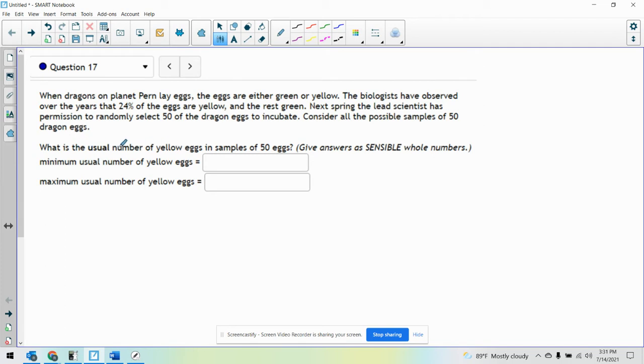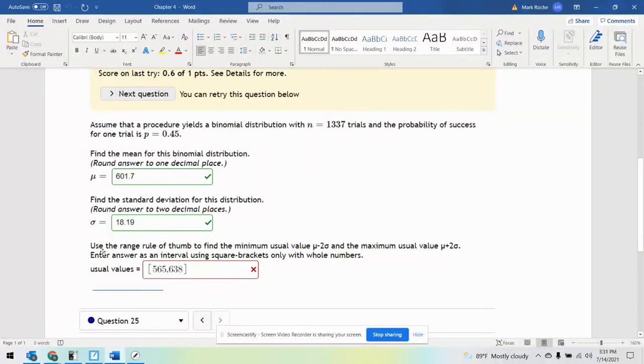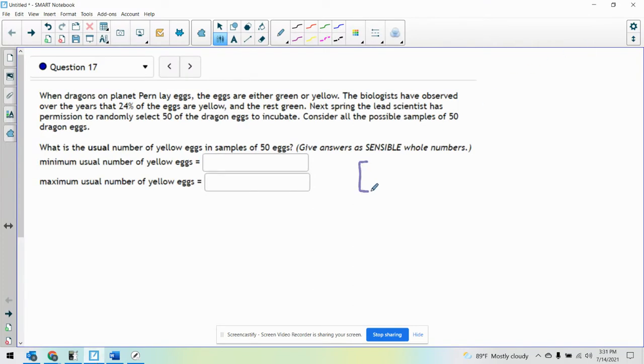What is the usual number of yellow eggs in the sample of 50? So I'm going to take a formula from the other problem you sent me, which is right here. Use the range rule of thumb to find the minimum usual value and maximum usual value. The minimum is going to be mu minus 2 sigma, and the max is going to be mu plus 2 sigma.